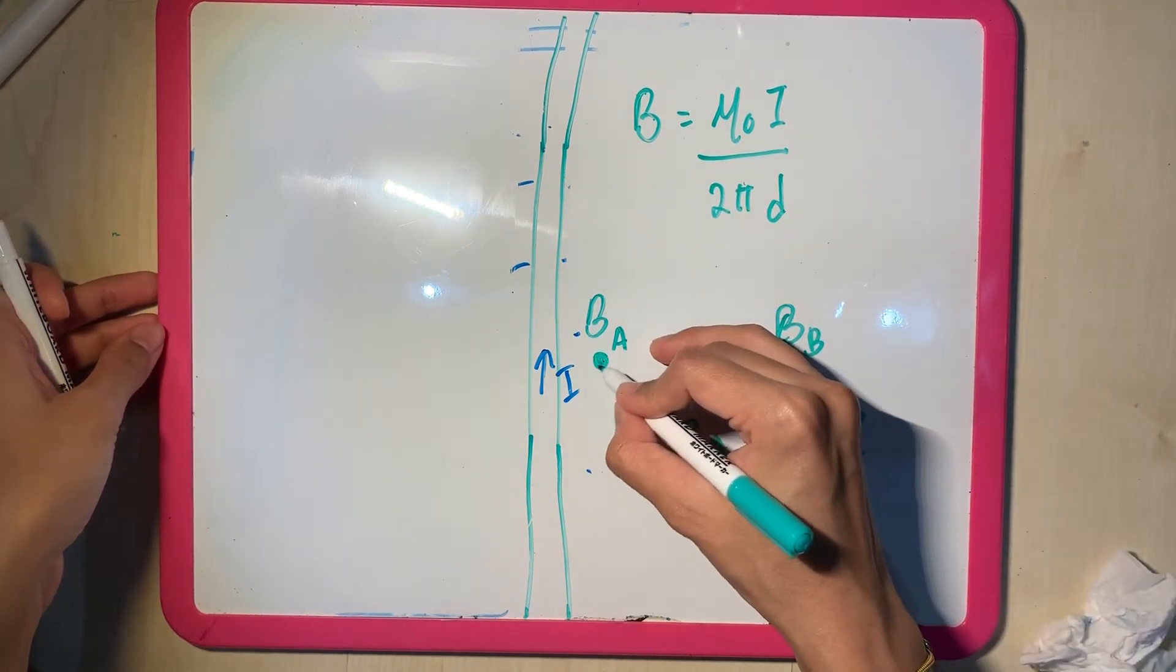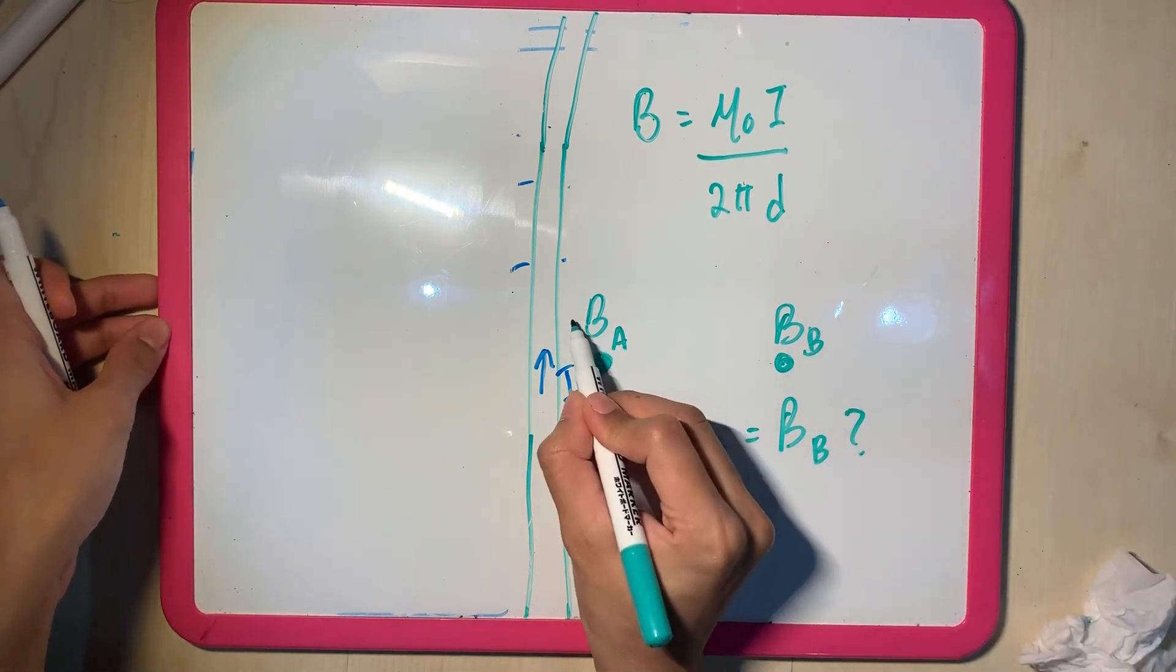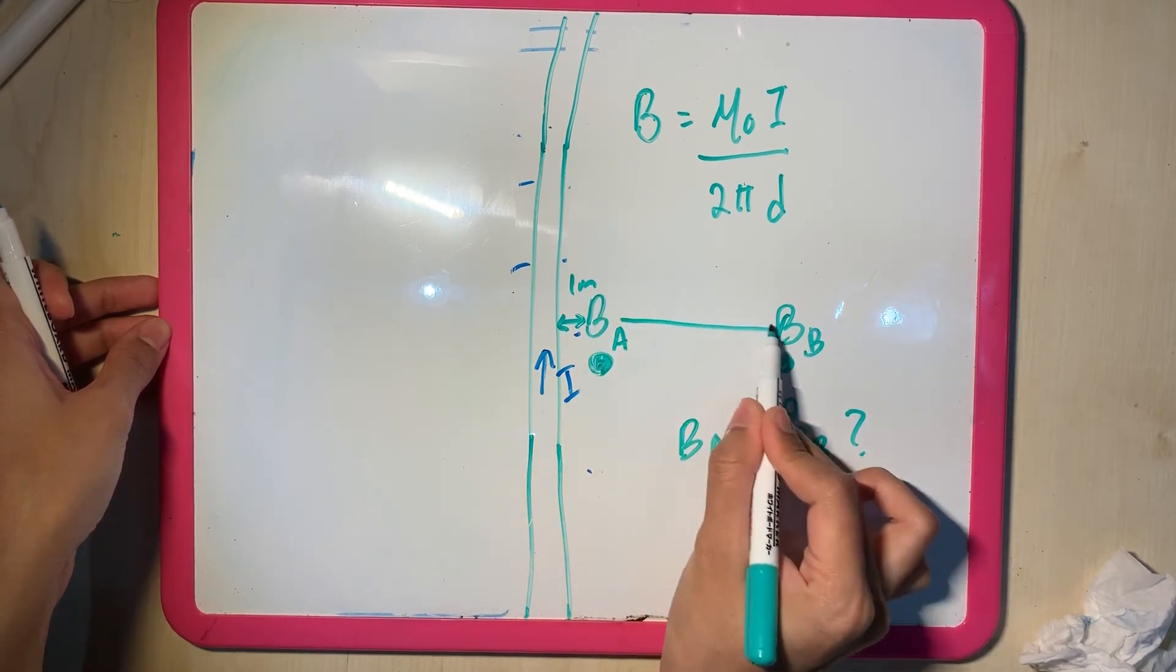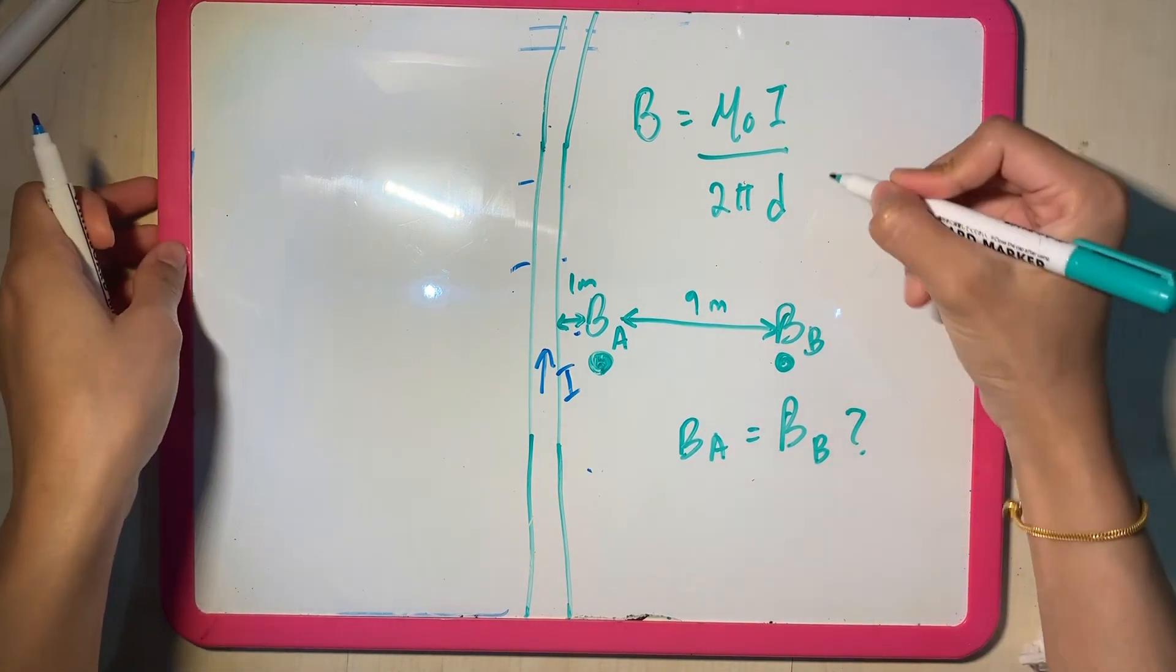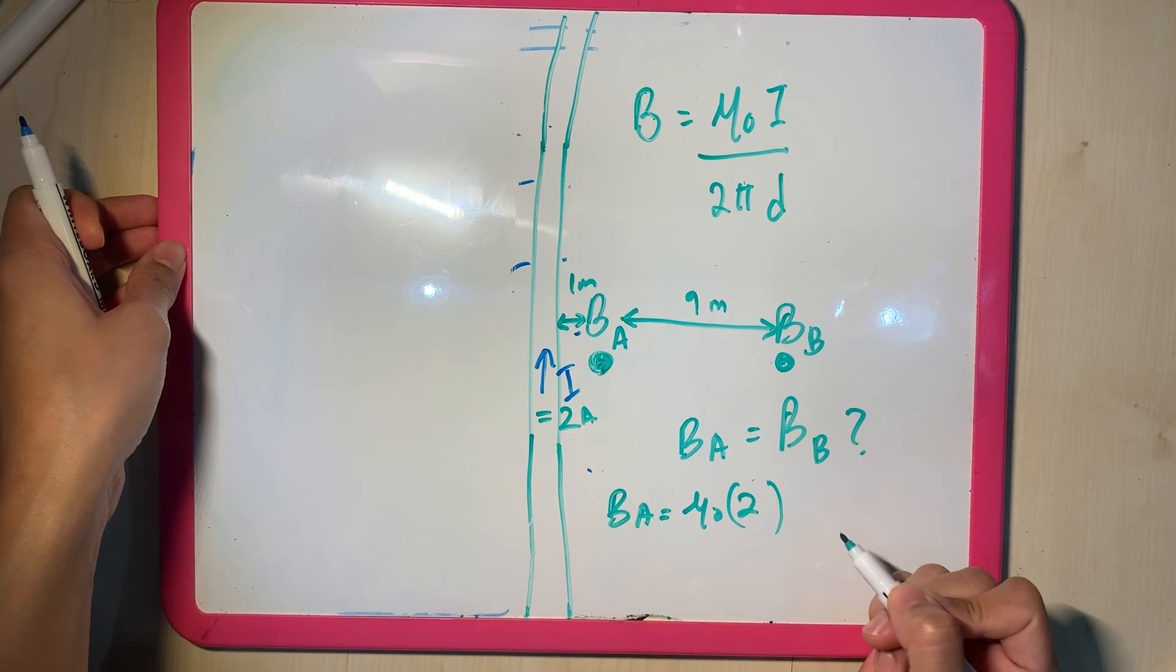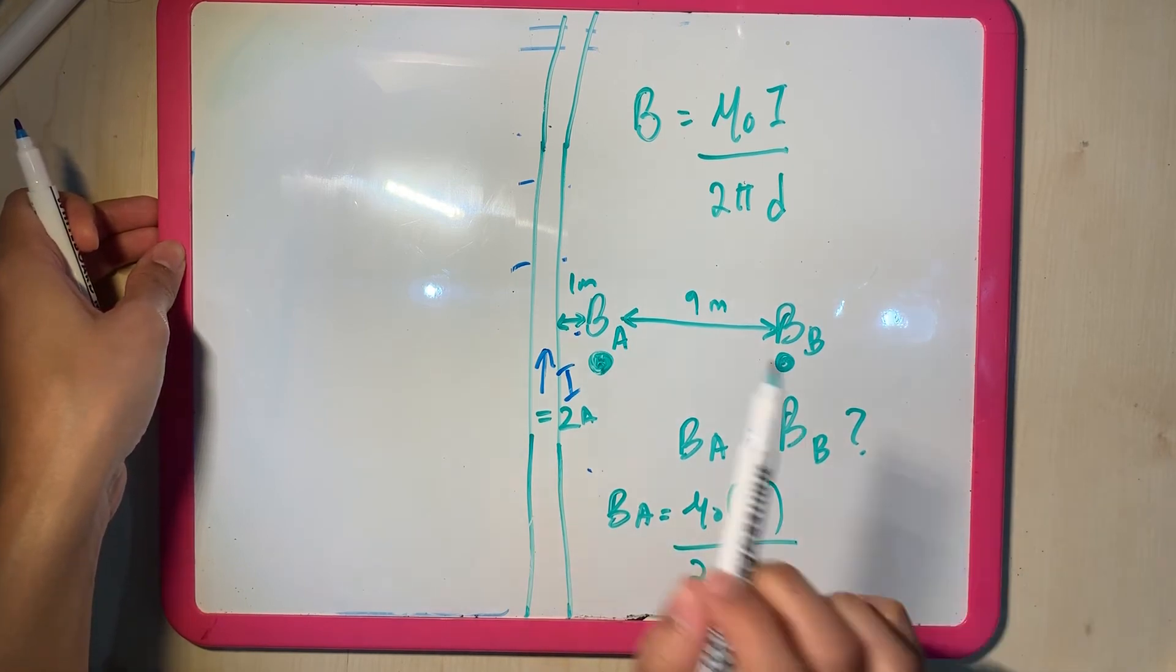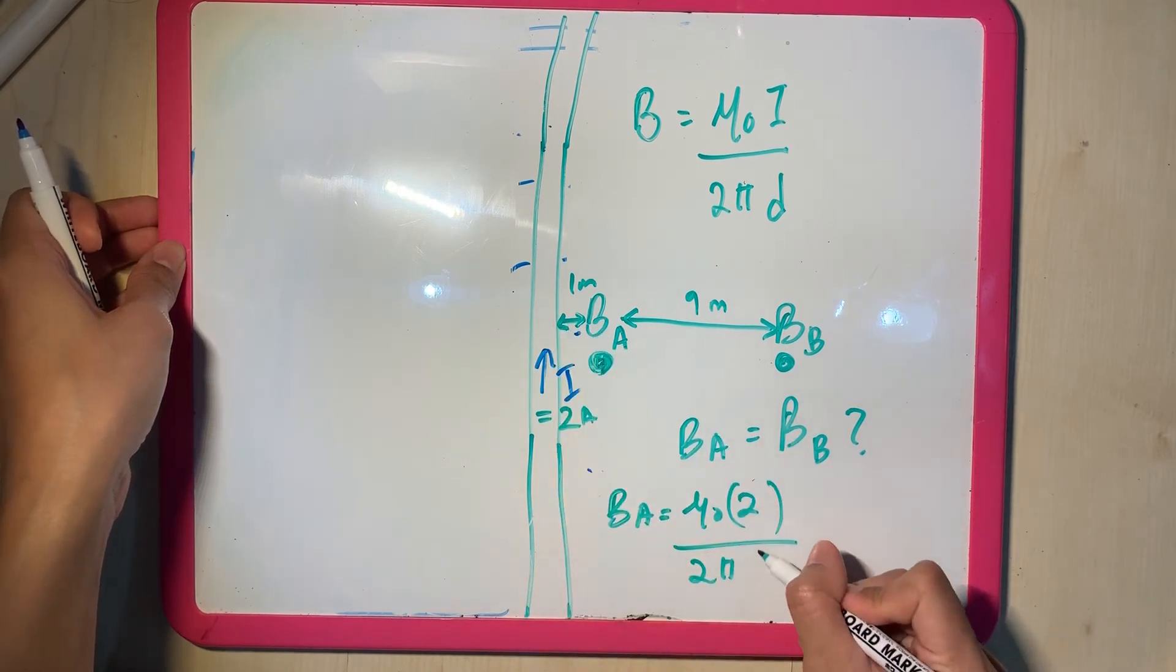D is the distance from the wire towards the point that you're interested in. In my case, I am very interested at point A and very interested in point B. So point A is just like 1 meter away, and this guy is like 9 meters away. That's pretty far. So BA should be mu naught, what is my I? Let's just say I is 2 amperes. So mu naught 2 amperes, 2 pi. My D is the point that I'm very interested in to the wire, which is 1.